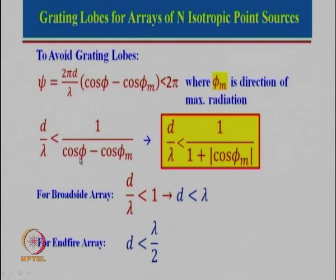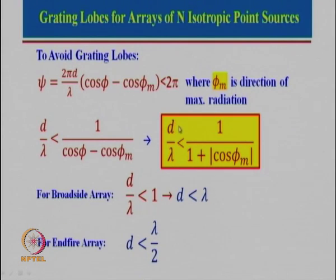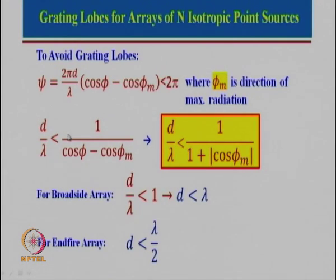The maximum value of cos(phi) as phi varies from 0 to 360 degrees can be minus 1, and the maximum value of this term can vary from 0 to 1. We can say that if d/λ is always less than the maximum of the numerator over denominator — which is 1 plus the amplitude of this term — then psi will never become 2π for any given value of phi_m.